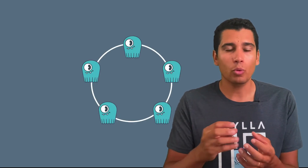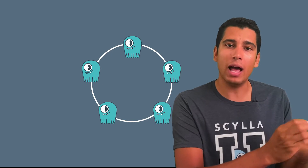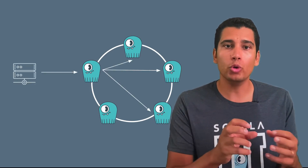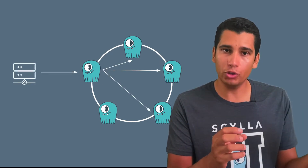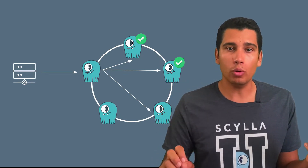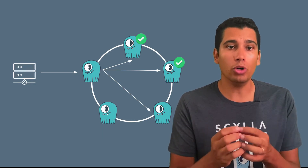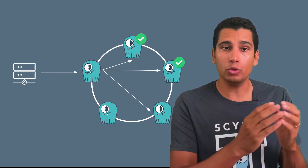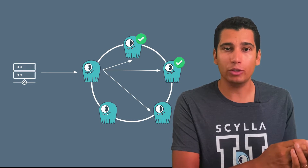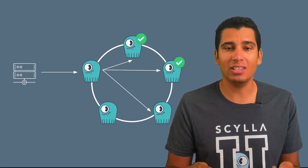We already know that ScyllaDB is a distributed NoSQL database, which means that your data is going to be in multiple machines. Let's say that you have an insert query — how many nodes need to acknowledge the insertion of that data in order for your database to send a response back to your server is determined by the consistency level.